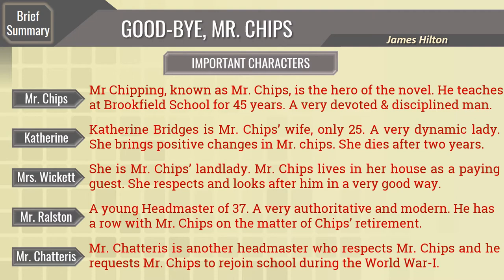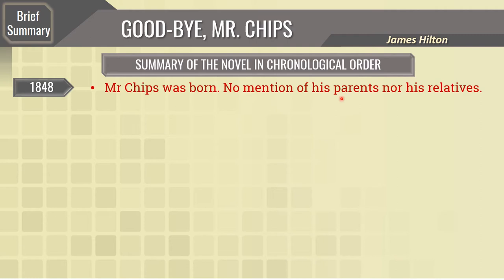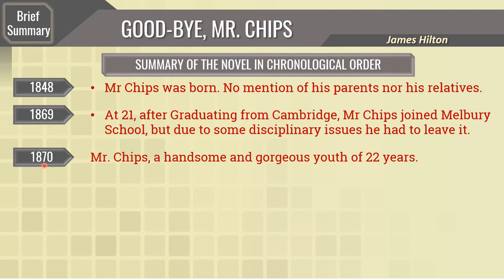Now dear students, let's discuss the summary of the novel in chronological order. 1848 is the year when Mr. Chips was born. There is no mention of his parents nor his relatives in the novel. 1869: when Mr. Chips was 21 years of age, after graduating from Cambridge, he joined Malbury School, but due to some disciplinary issues he had to leave it after just one year. 1870 is a very important year. At that time Mr. Chips was a handsome and gorgeous youth of 22 years.